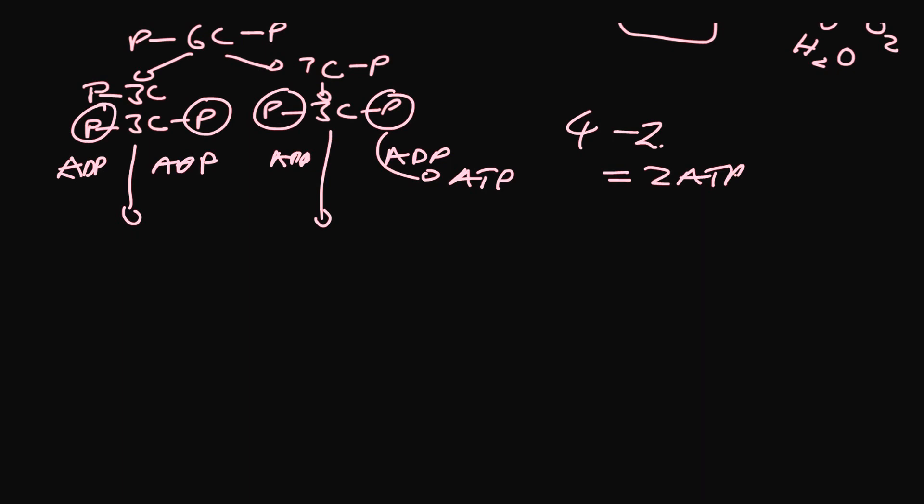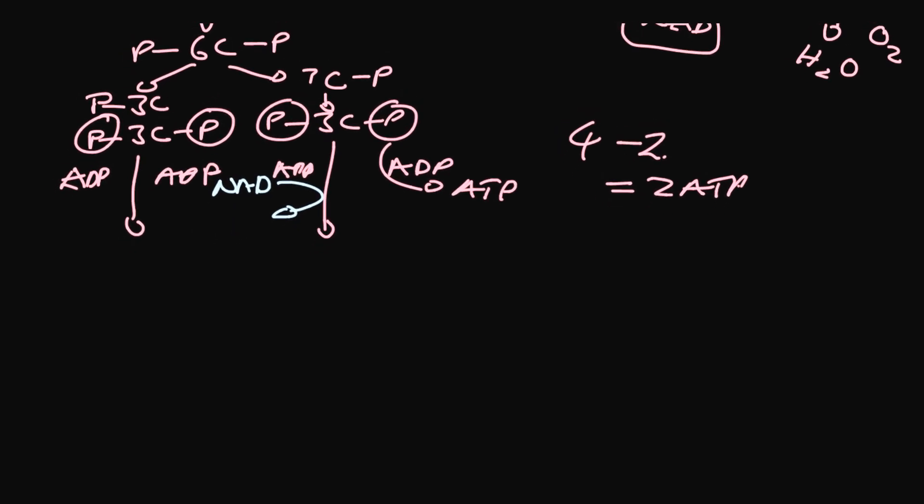Additionally, and crucially, you have reduced an NAD to an NADH. Here we go again, to an NADH. And this happens twice, one for each of the triosebiphosphates being turned into pyruvates.